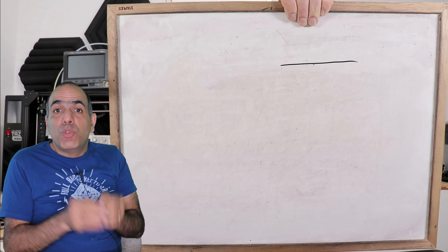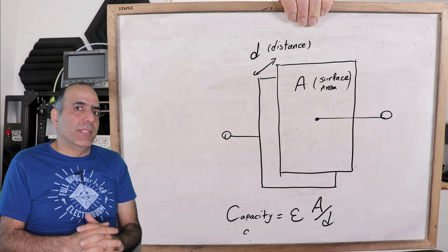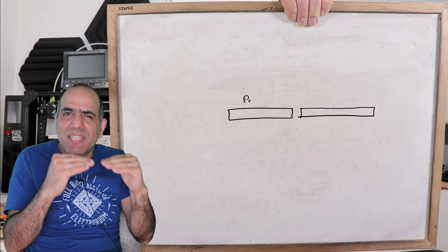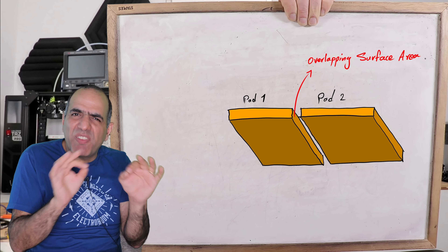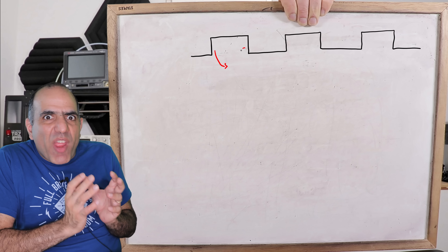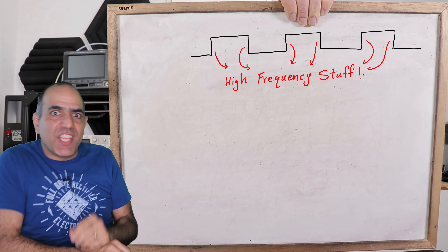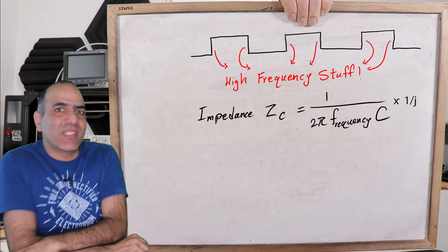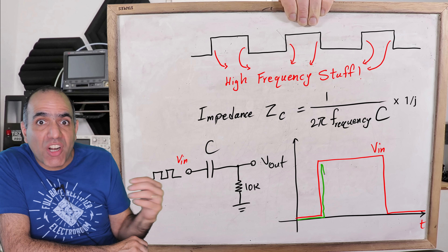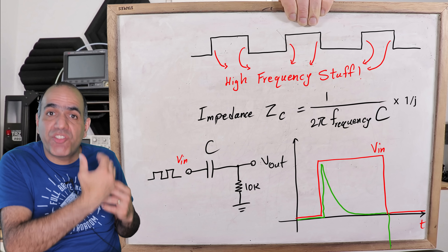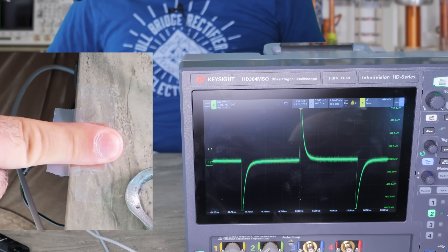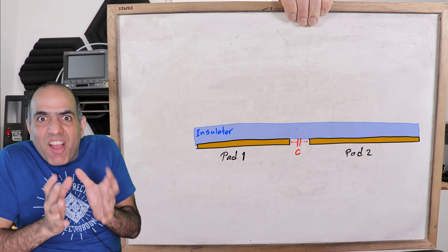Like I explained in my old video, two conductors close to each other make a capacitor, and its value gets bigger by the overlapping surface area between them. So when we put the two pads side by side, although the overlapping surfaces between them are very small, they still create a very small capacitance. A square wave has very high frequency components in its edges, and the impedance of a capacitor drops with frequency, so the edges of the square wave can easily get through the capacitor, charge it, then quickly discharge through the external 10k resistor.